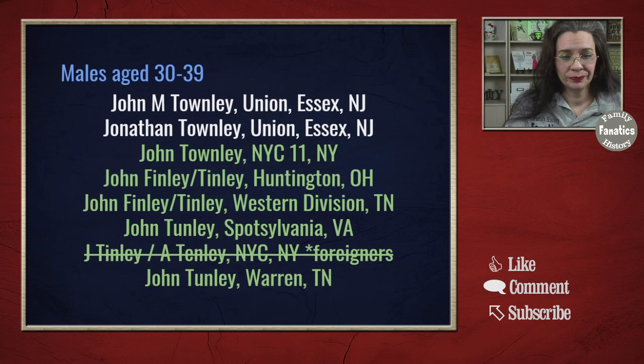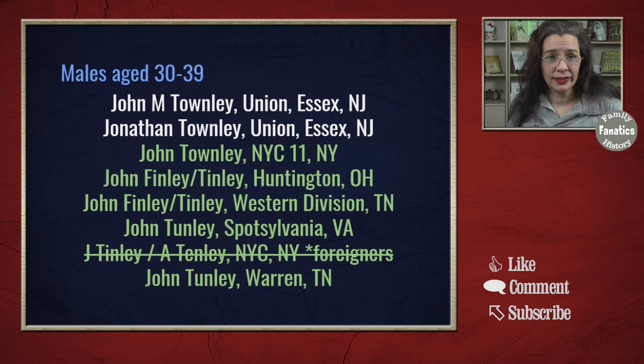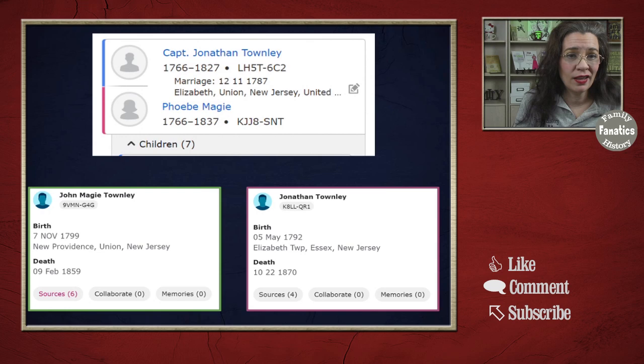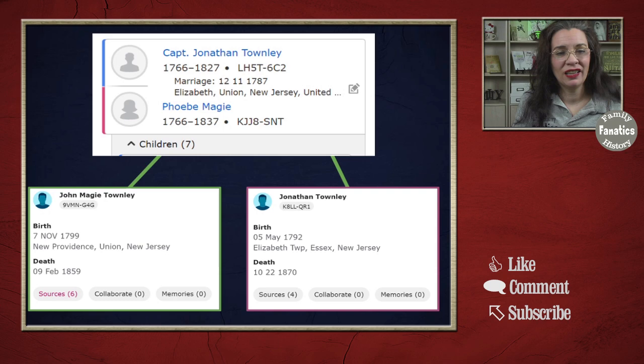The first two entries are John M. Townley of Union, Essex County, New Jersey, and Jonathan Townley of Union, Essex County, New Jersey. I looked at both of them and there is documented evidence that they are related to Jonathan and Phoebe Townley as their parents. So if Jonathan is their father, then Effingham is not — we went ahead and took them off the list.